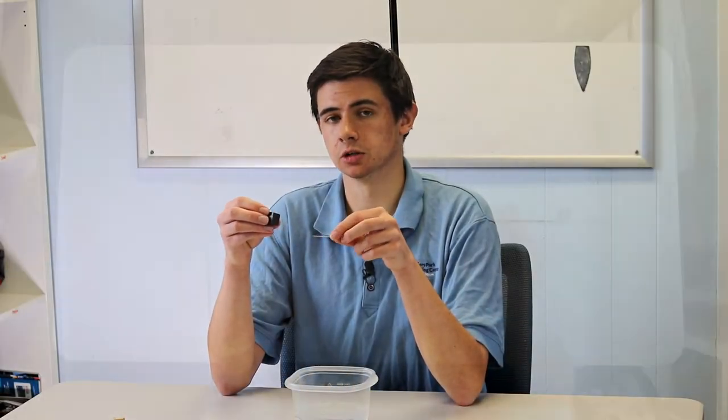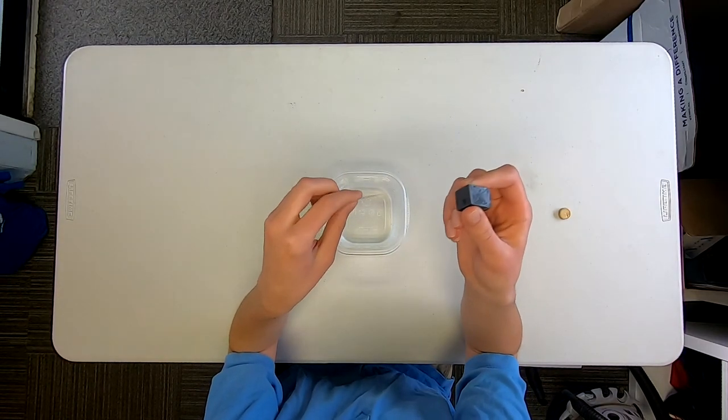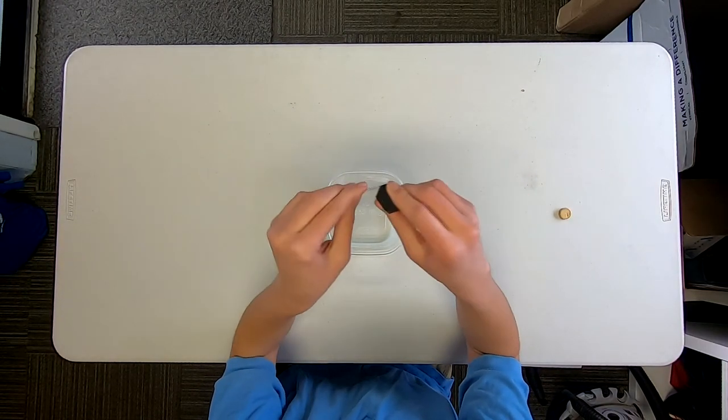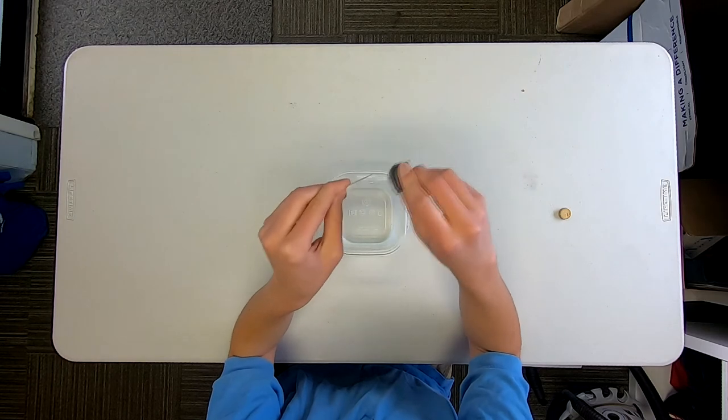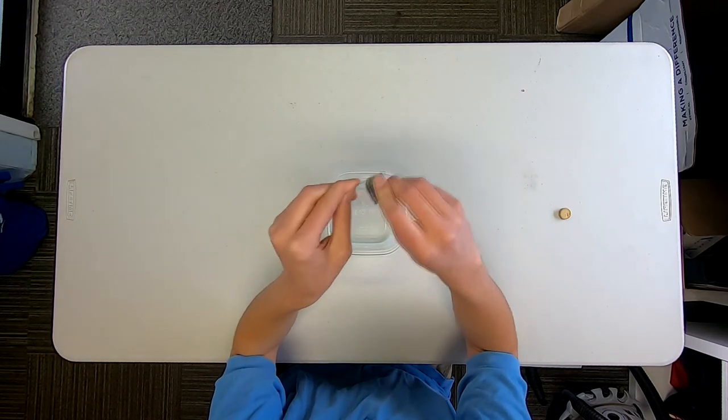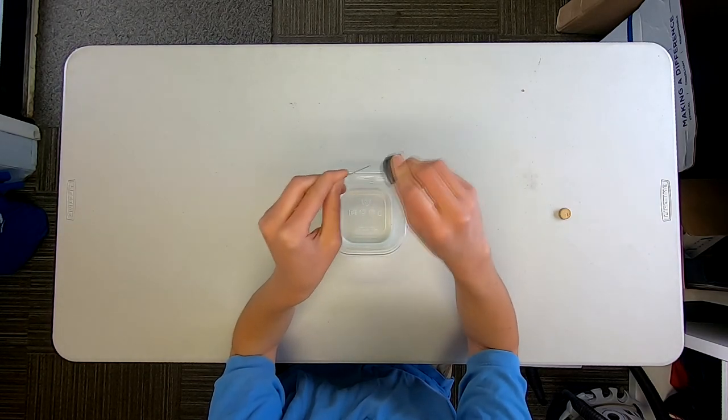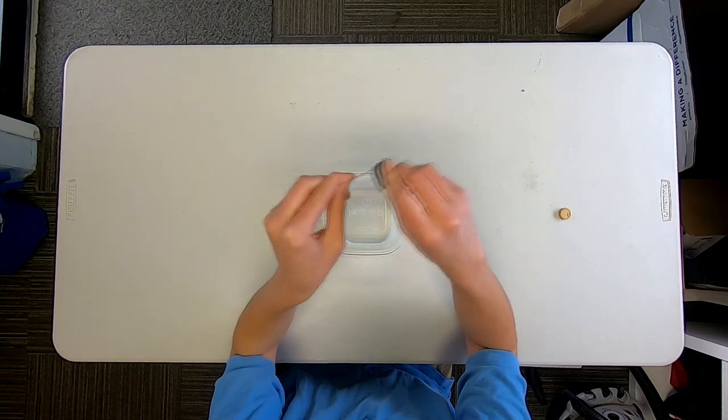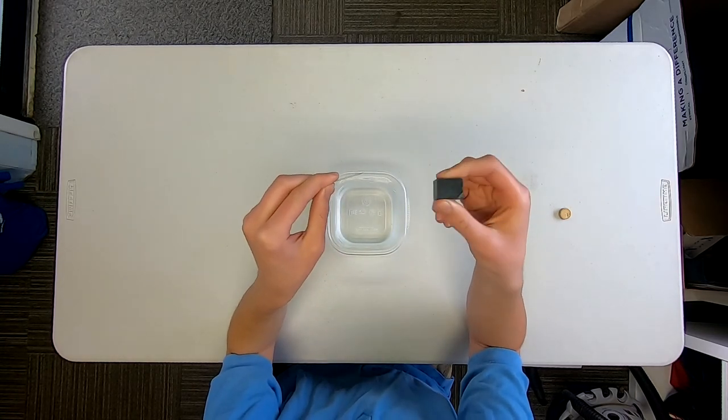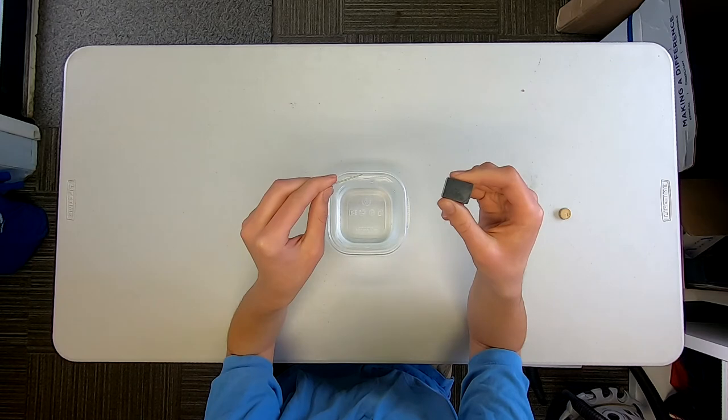So the first thing that we're going to want to do is magnetize our needle. To do that, you're going to take one side of the magnet and one side of the needle and rub it about 20 times. If your magnet isn't that strong, you might have to do it more than 20 times.